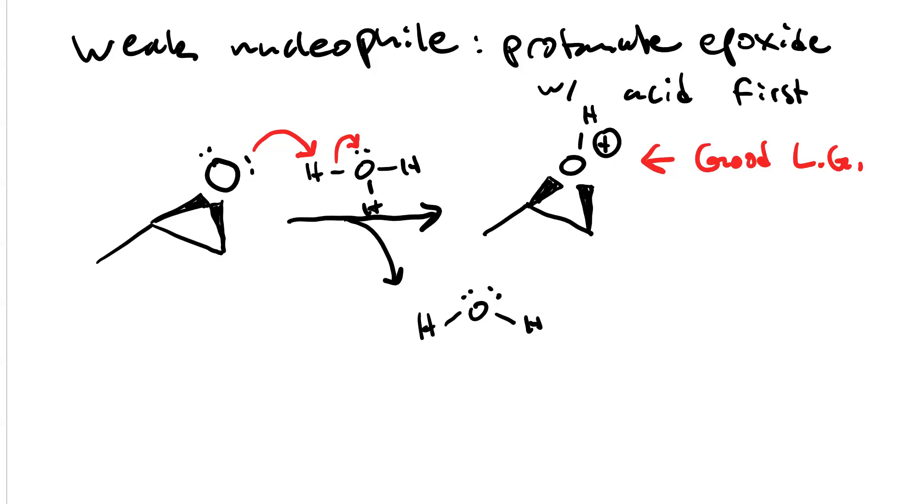So this water can now attack, but the regiochemistry here is a little bit more complicated. When we have a choice between primary and secondary, sterics wins. So we take primary over secondary. That means the water is going to attack that primary position and the ring will open.